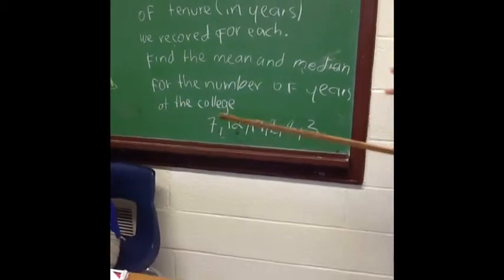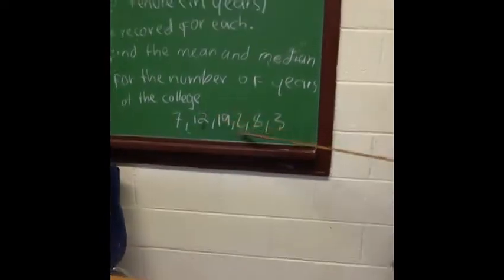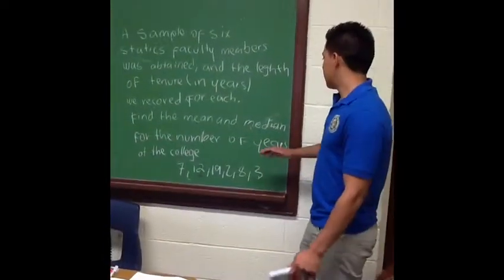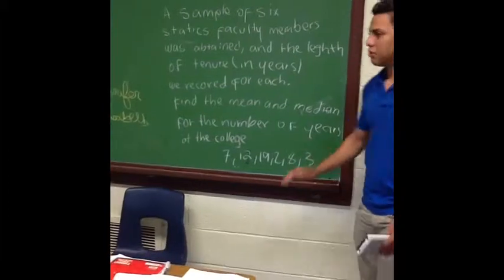The numbers that you have here are seven, twelve, nineteen, two, eight, and three. We are going to set the calculator to find the mean and median.